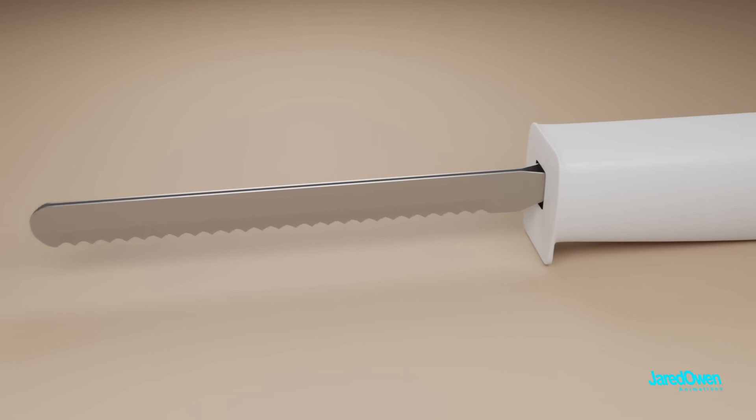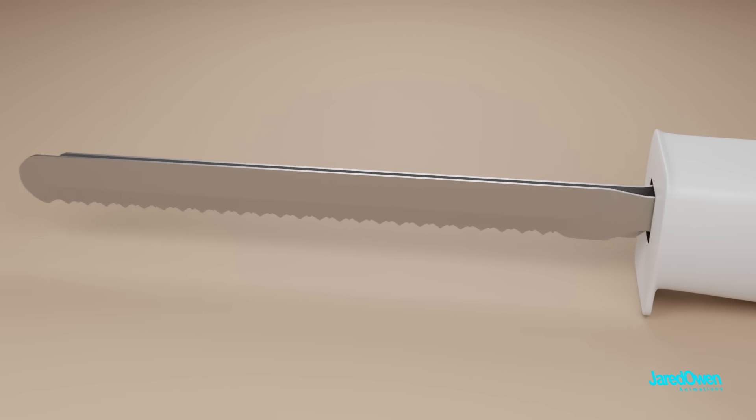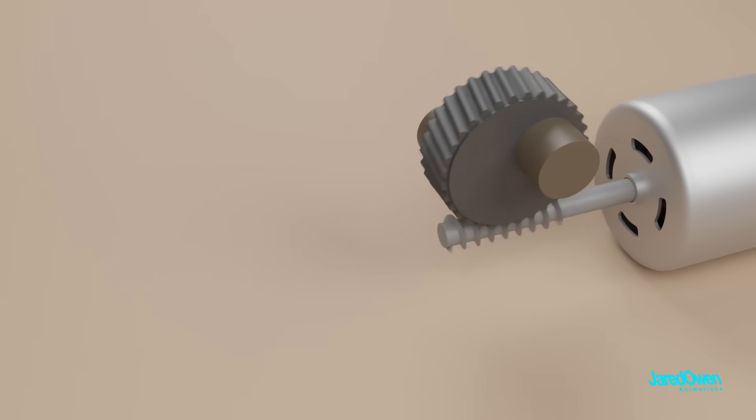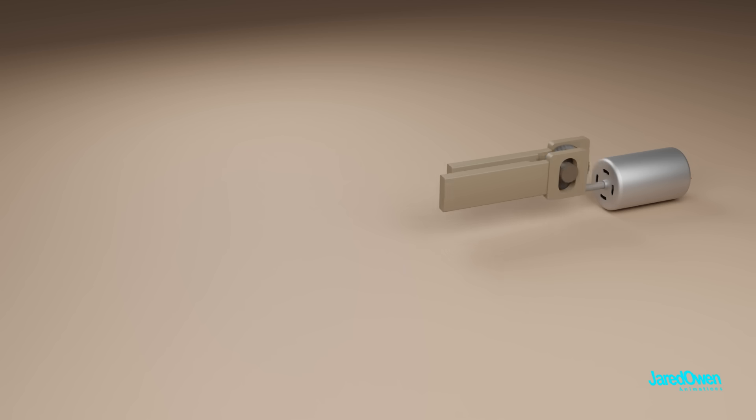Or how about this electric cutting knife? Each blade is going back and forth. It all starts with the spinning of the motor to turn a gear, which then pushes these two pieces back and forth.